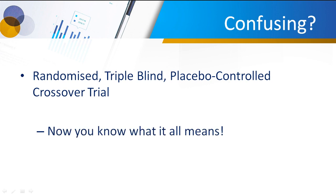So if you read in a journal that we did a randomised, triple blind, placebo-controlled crossover trial, you now know what it all means. It's randomised because we're randomising our patients into two different groups. It's triple blind, so none of the patients, the researchers, or the analysts know which treatment they're getting. It's placebo-controlled, meaning treatment versus a placebo. And it's a crossover trial, so two groups initially get a particular treatment and then later cross over to get the opposite treatment. These things sounded confusing, but not anymore.